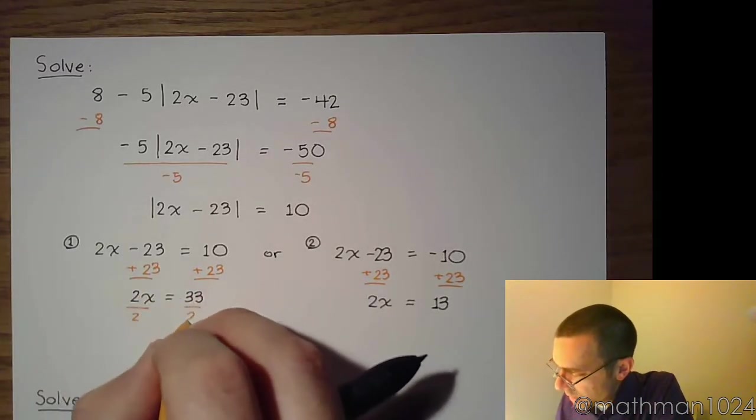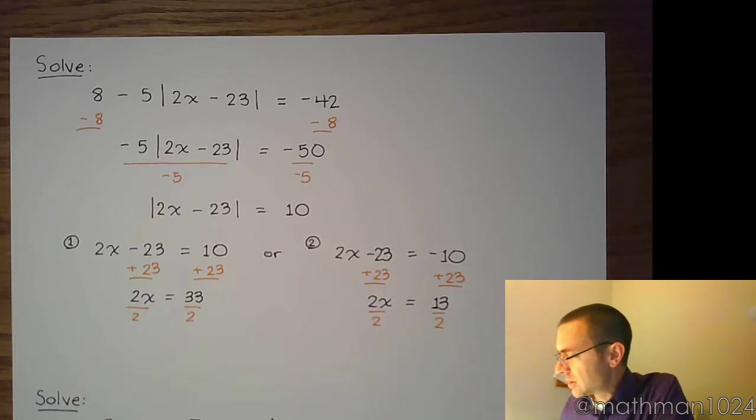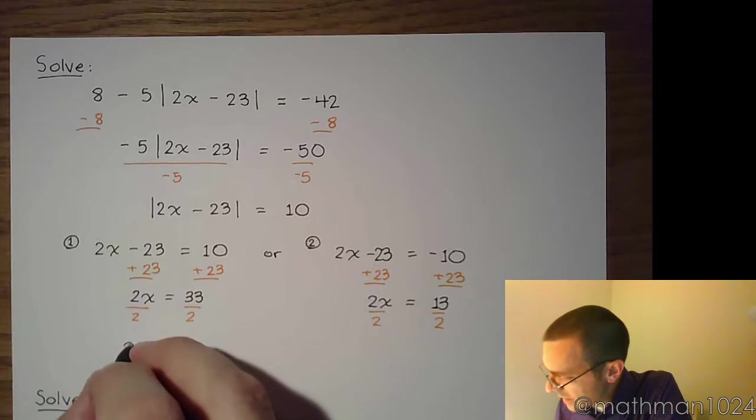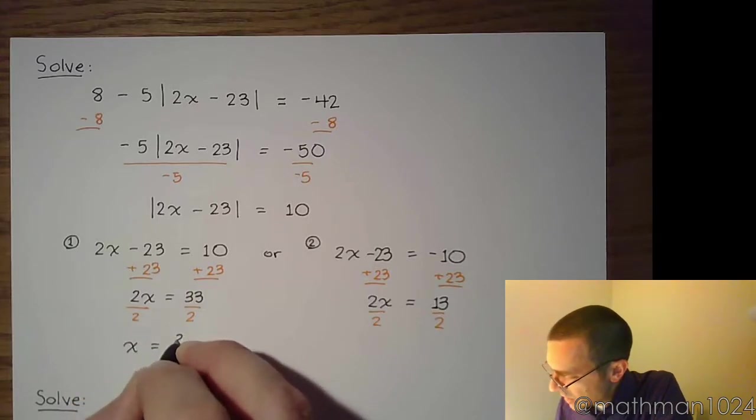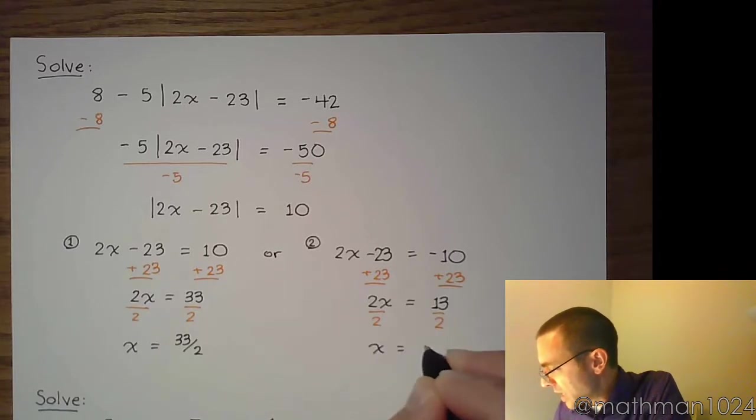Then you divide both sides over here by 2, and that's the same step we have to take on the right equation. So x is equal to 33 halves, or x is equal to 13 halves.